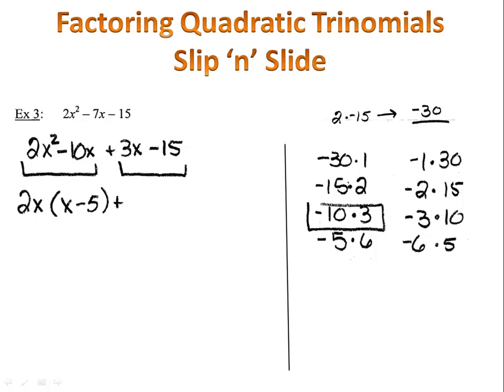Then, I take the x minus 5, and put it on the other side also. On the second side, I look for the greatest common factor. The greatest common factor is 3. Once again, I can check that this is correct by using the distributive property. 3 times x is 3x, and 3 times negative 5 is negative 15.